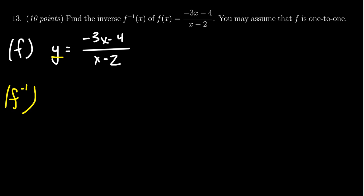Therefore, the y variable becomes an x, and the x variables become y's. So we get x equals negative 3y minus 4 over y minus 2. Now, our goal is to solve for the y-coordinate, because that'll give us the formula for f inverse of x.